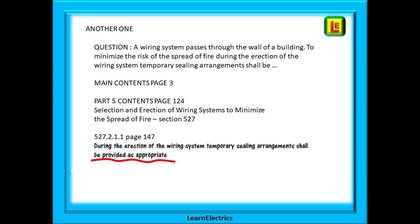Another question. A wiring system passes through the wall of a building to minimize the risk of the spread of fire during the erection of the wiring system temporary sealing arrangements shall be. So find the Part 5 contents page on page 124. Here we find selection and erection of wiring systems to minimize the spread of fire section 527 and there is regulation 527.2.1.1 on page 147. The answer is sealing arrangements shall be provided as appropriate.